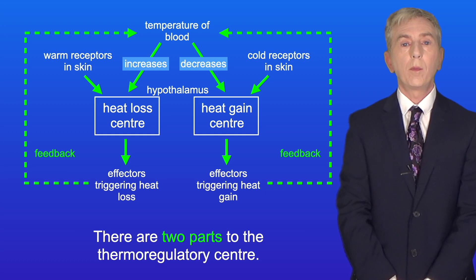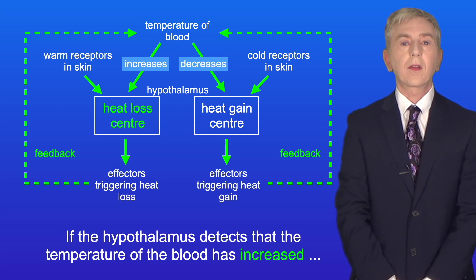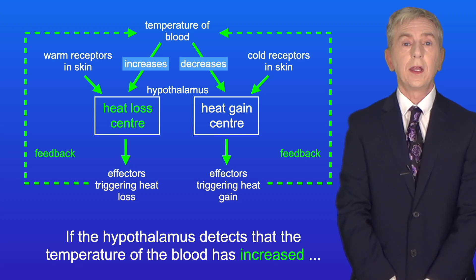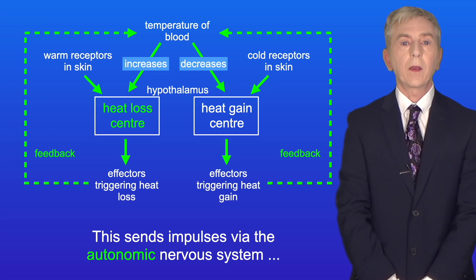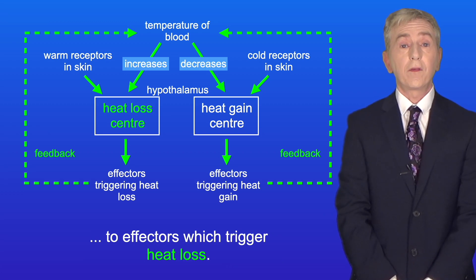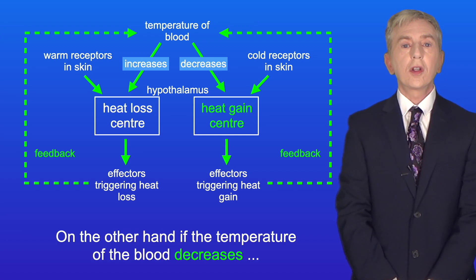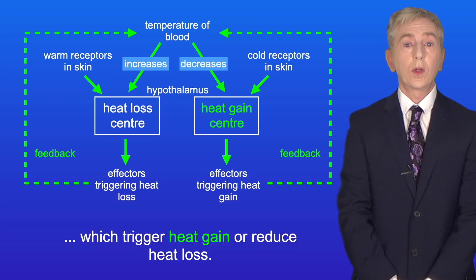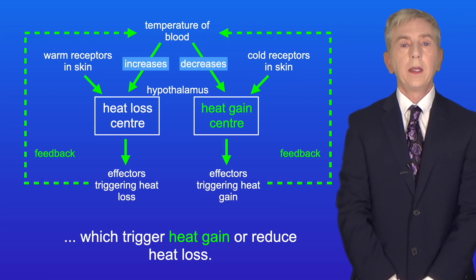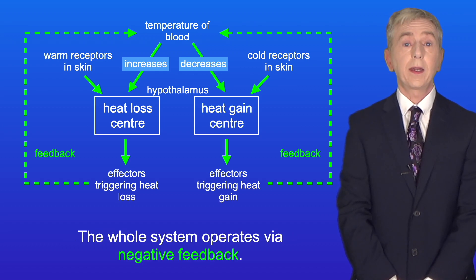There are two parts to the thermoregulatory center. If the hypothalamus detects that the temperature of the blood has increased, then the heat loss center is activated. This sends impulses to effectors which trigger heat loss. On the other hand, if the temperature of the blood decreases, then the heat gain center is activated. This sends impulses to effectors which trigger heat gain, or reduce heat loss. And the whole system operates via negative feedback.